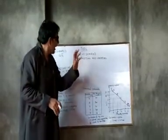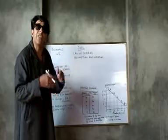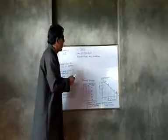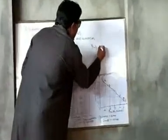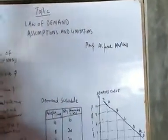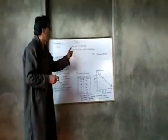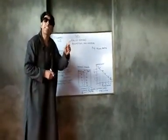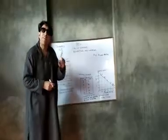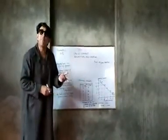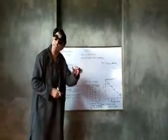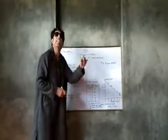Regarding this inverse relationship, we take the definition of Professor Alfred Marshall, who is the propounder of this law of demand. Professor Alfred Marshall was the first neoclassical economist who propounded this law. He says: other things remaining constant, quantity demanded of a commodity increases with a fall in price and diminishes with a rise in price.